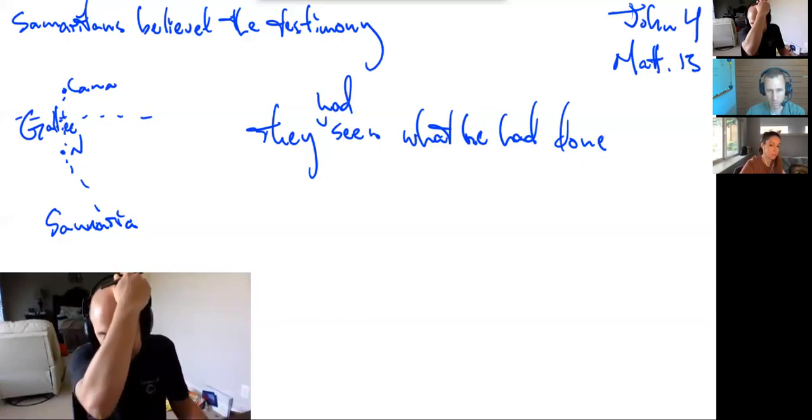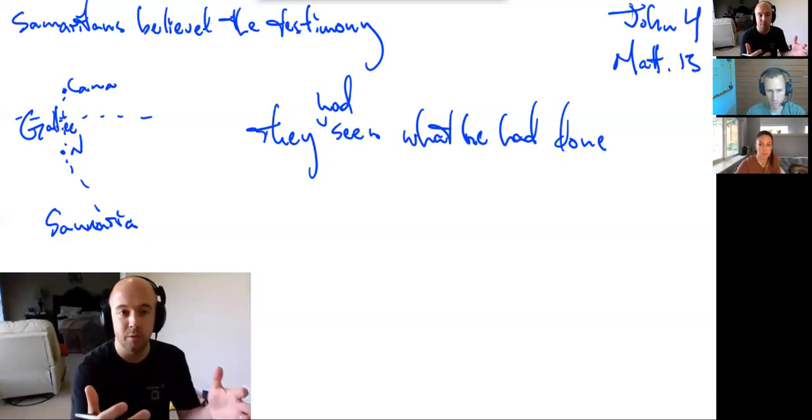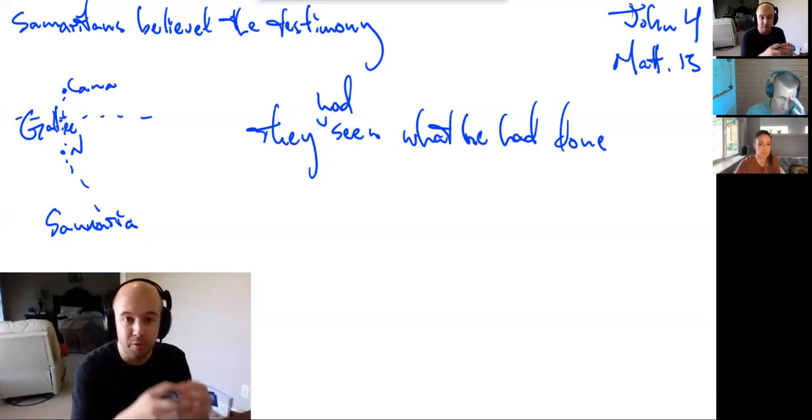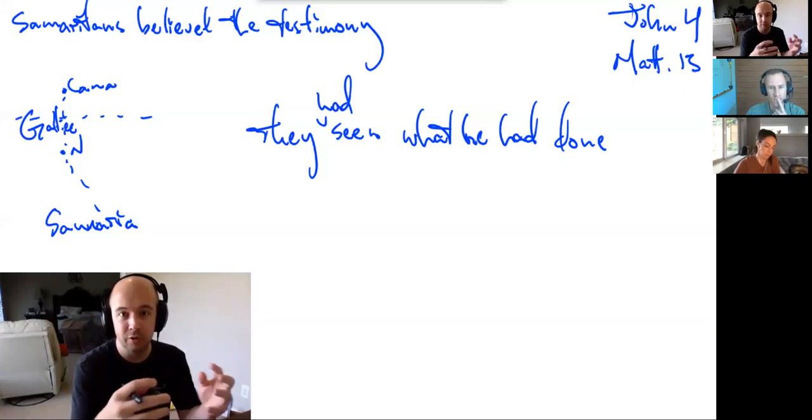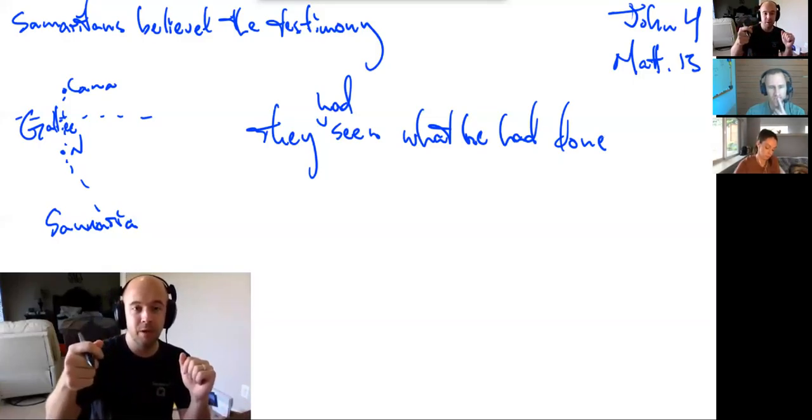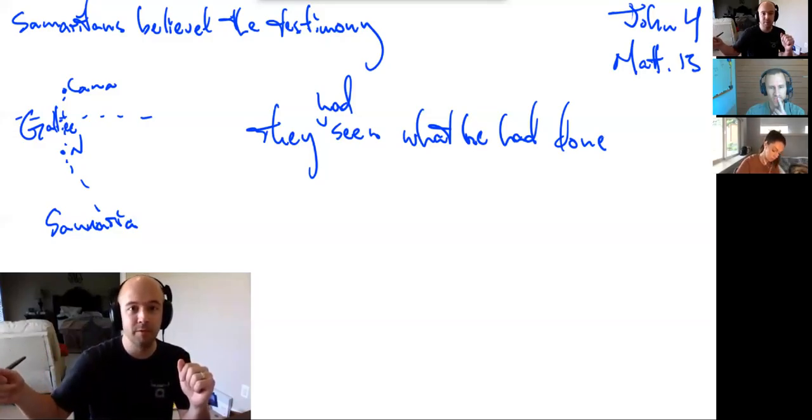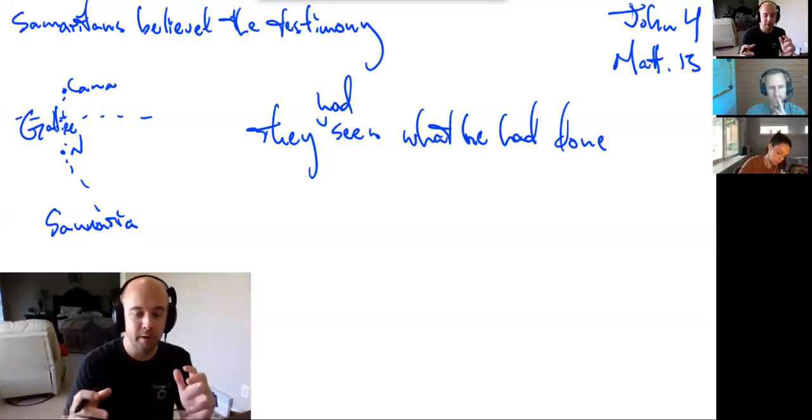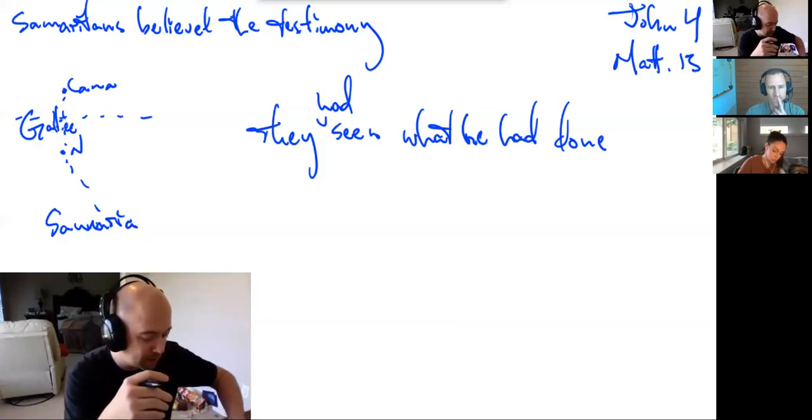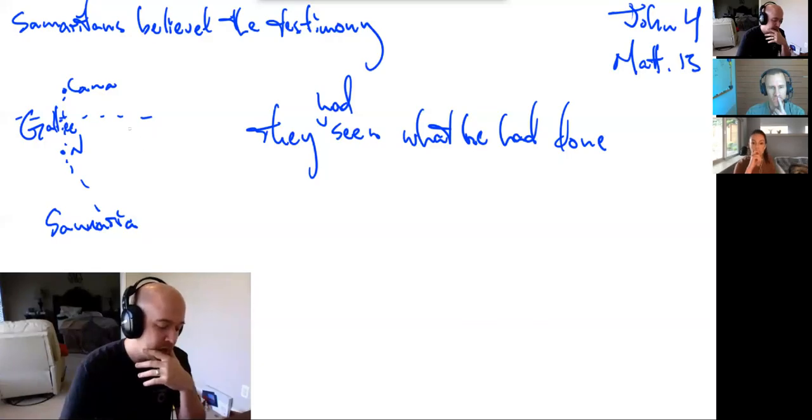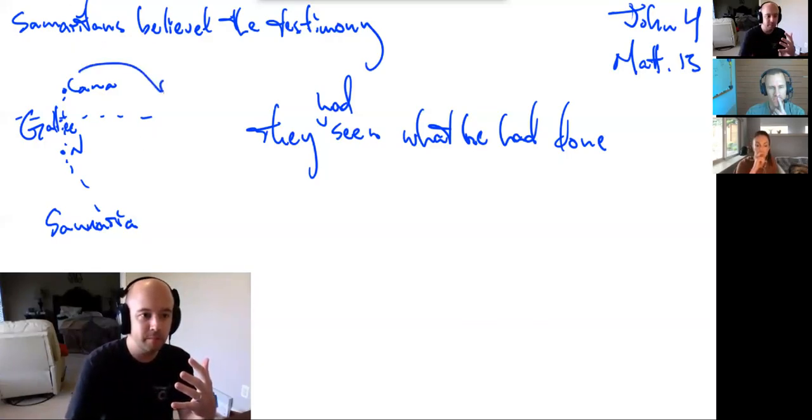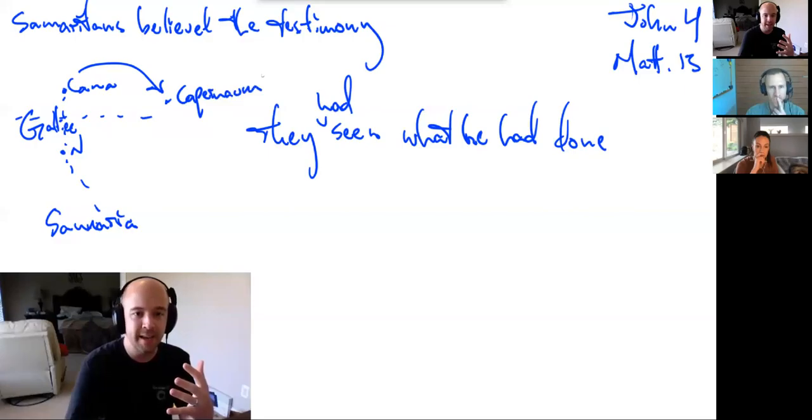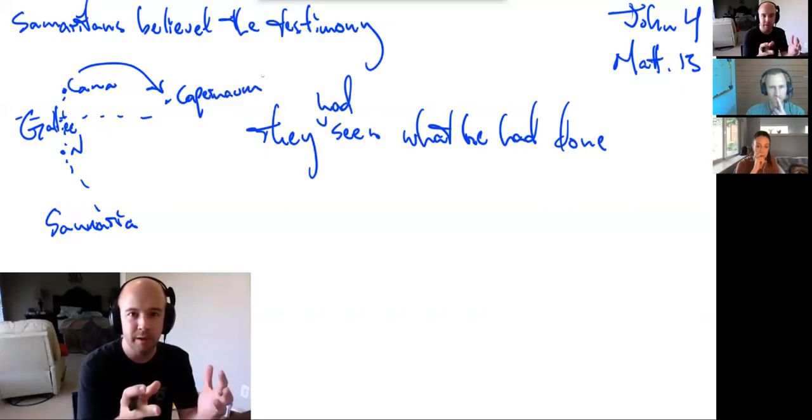Because they had seen what he had done in Jerusalem. They had seen what he had done in Jerusalem. They had seen the signs and wonders that he did in Jerusalem because they were down there for the Passover too. Jesus didn't go alone. This was a big feast for the entire nation. They went down to Jerusalem. They had seen the signs and wonders. And now he's come back home, so to speak. In their minds, he's a countryman. This is a Galilean and they're Galileans. And he did all those cool things.